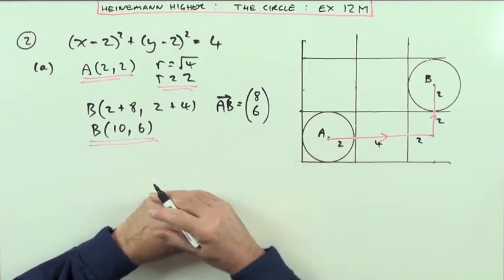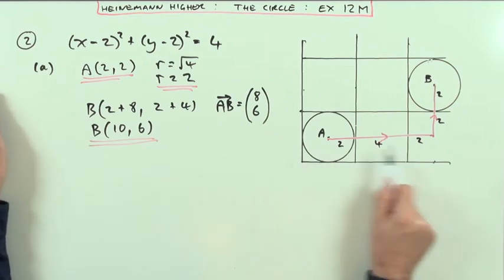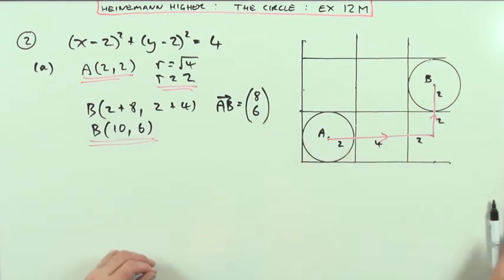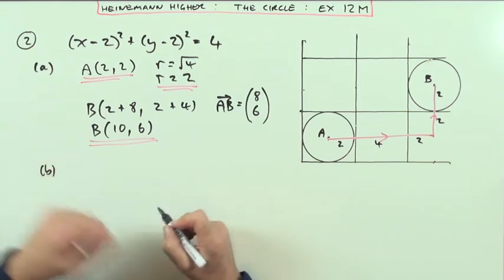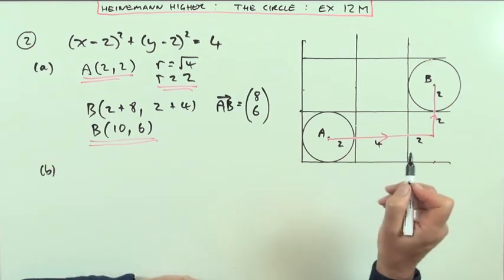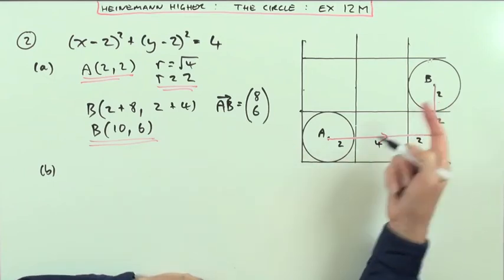Or you could write it in words: eight along, six up. So you go eight along, six up from (2,2) takes you to (10,6). Now that was the first bit, that was easy enough, and even easier is the next bit.